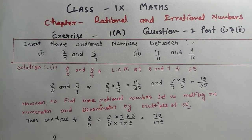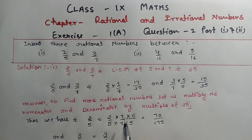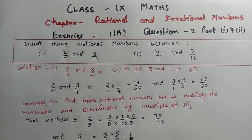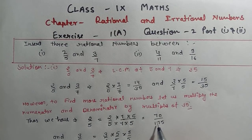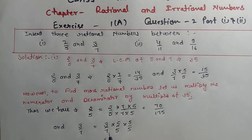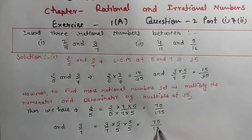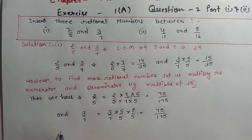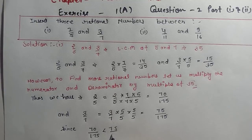For the next number, 3/7, we multiply numerator and denominator by 25. So 3 times 25 gives 75, and 7 times 25 gives 175. So 3/7 becomes 75/175. Now we have 70/175 and 75/175. Since 70/175 is less than 75/175, we can insert rational numbers between them.